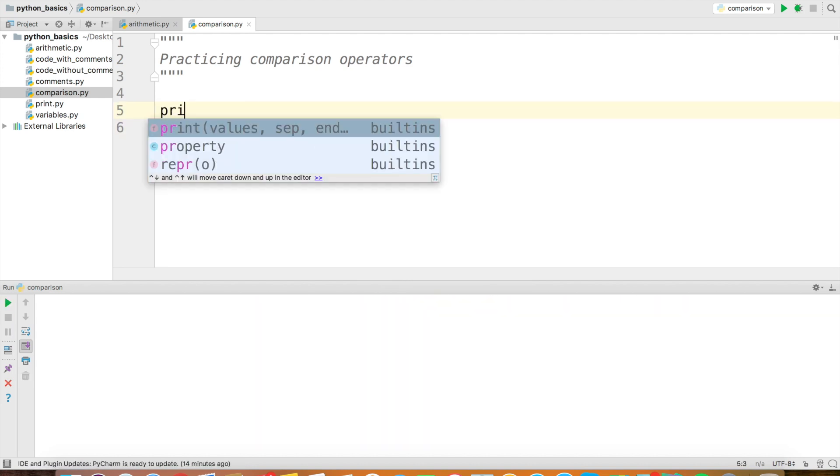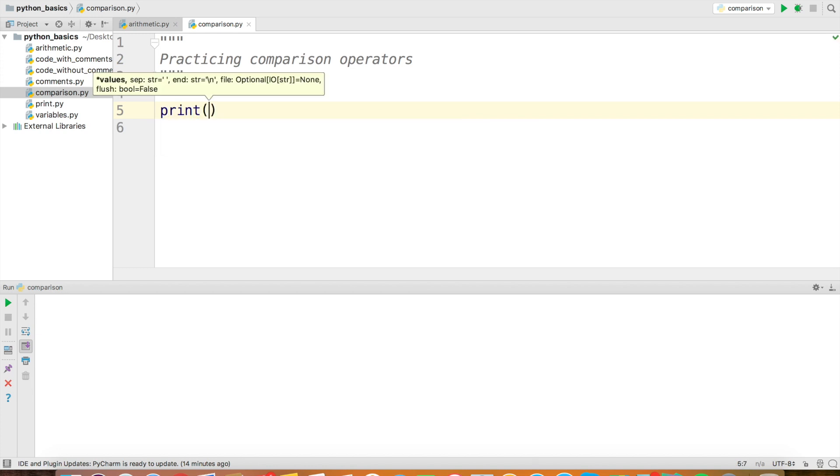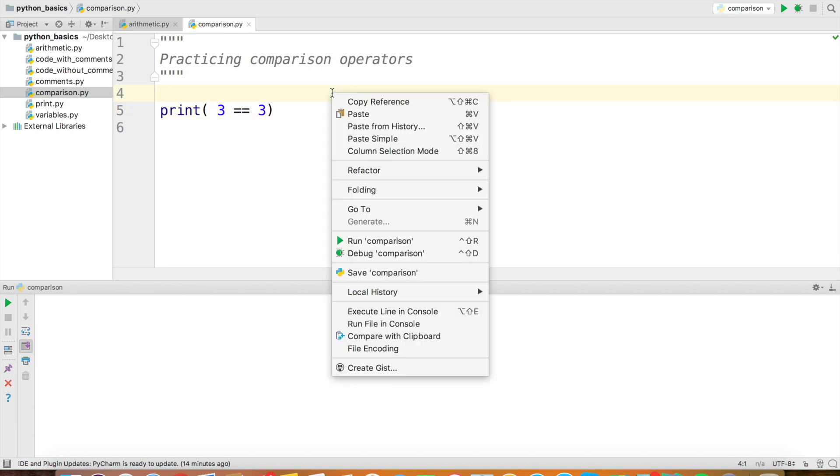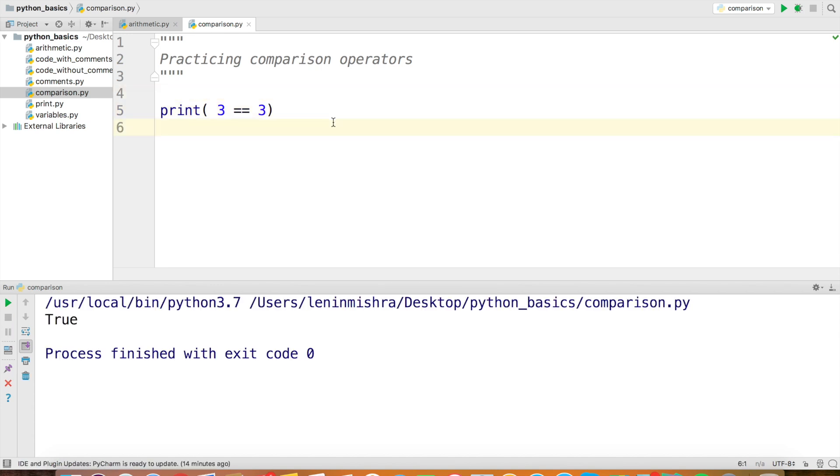Let's say I want to check if both the operands are equal. Then I can use the equal to equal to operator. Similarly, if I want to check if both the operands are not equal, then I can use the exclamation equal to operator.